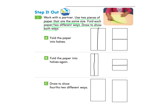It asks you to draw to show fourths in two different ways. We can show fourths up and down — we do the middle one first, then we cut both sides in half and we have four equal parts. That's one way to have fourths. Then going the other way, we go in the middle first, then find the middle of the top square and the middle of the bottom square, and now we have fourths another way with the same paper.